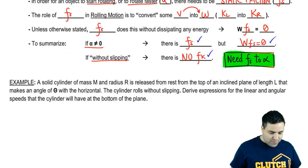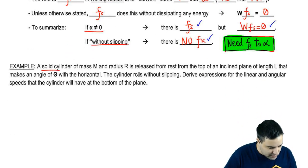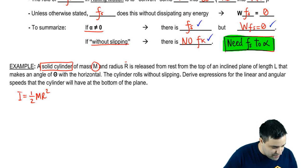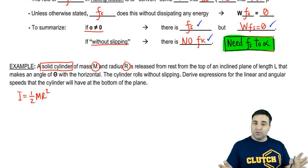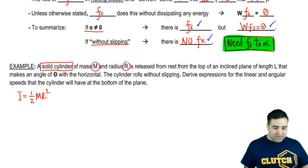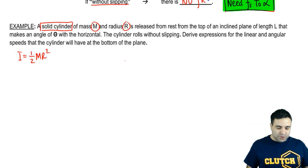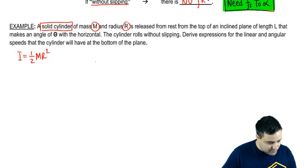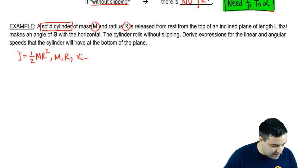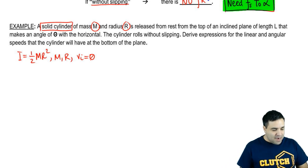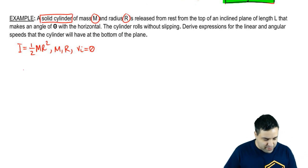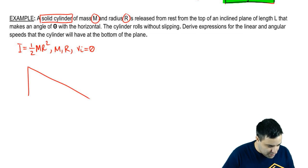Let's do an example here. So we have a solid cylinder. Solid cylinder is the shape, which tells me that I'm supposed to use I equals half MR squared. The mass is M, the radius is R. So this is a literal solution. We're going to solve this with letters, derive an equation here instead of actually getting numbers. It is released from rest, so V initially equals zero, from the top of an inclined plane of length L.